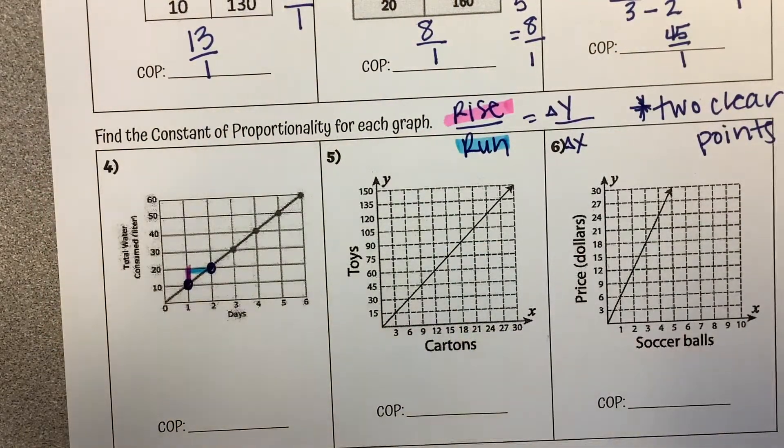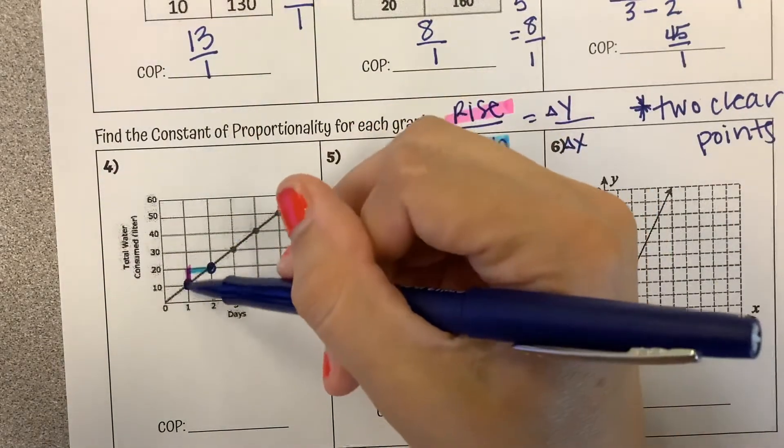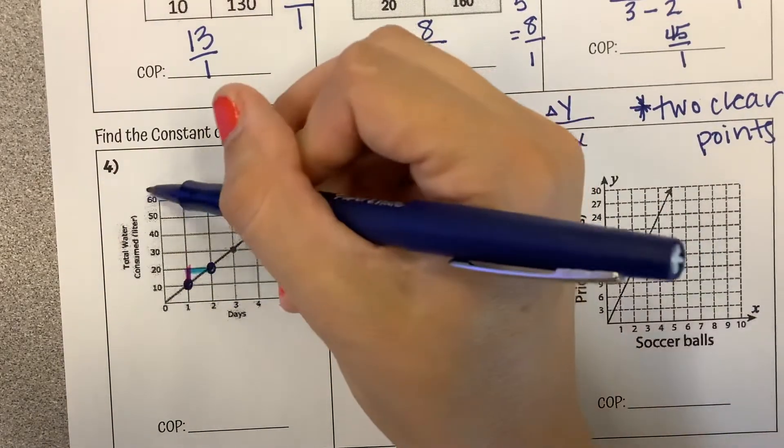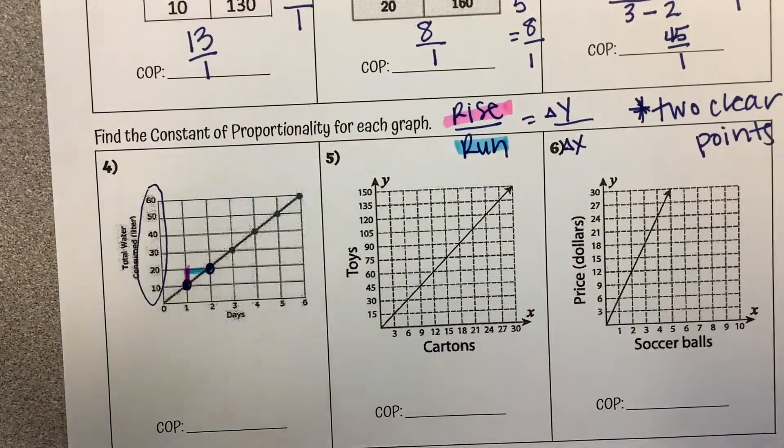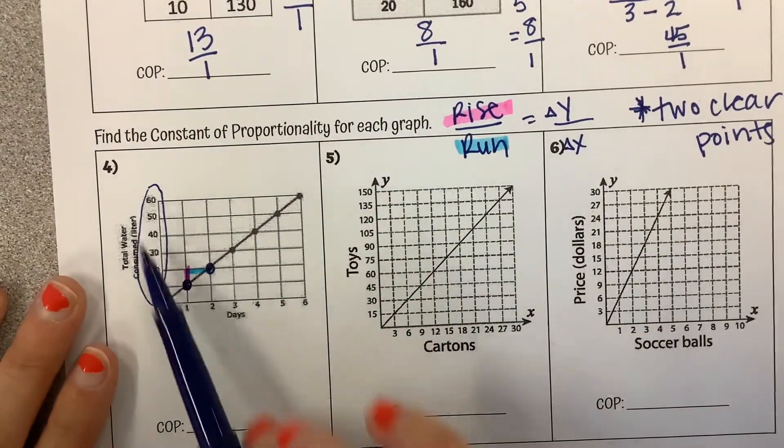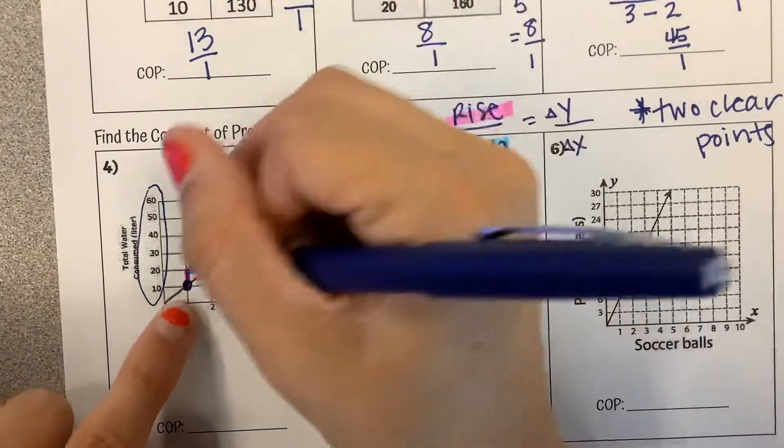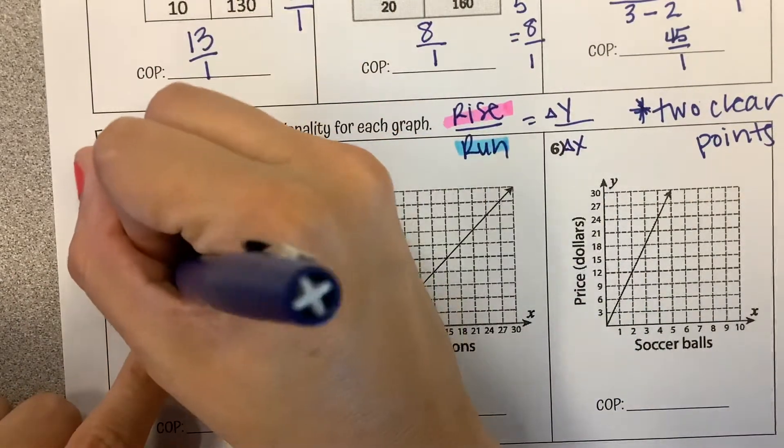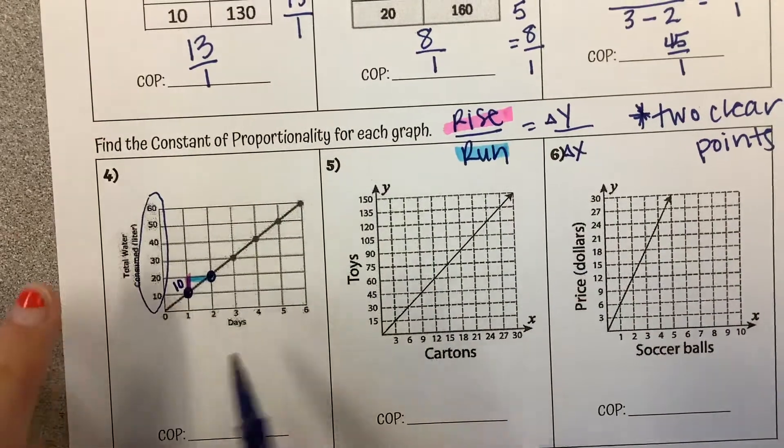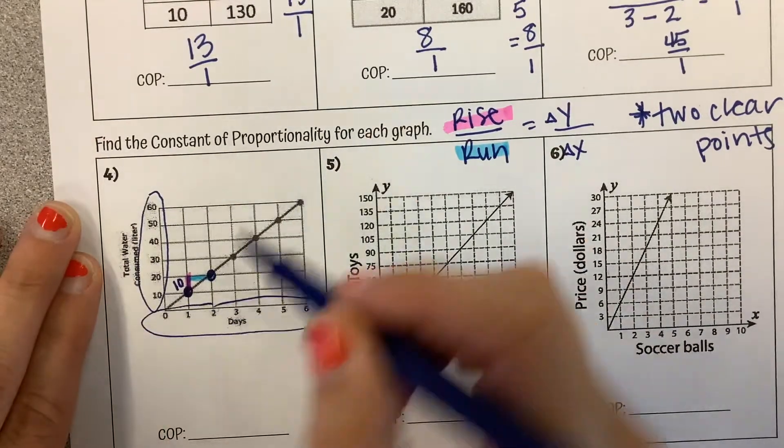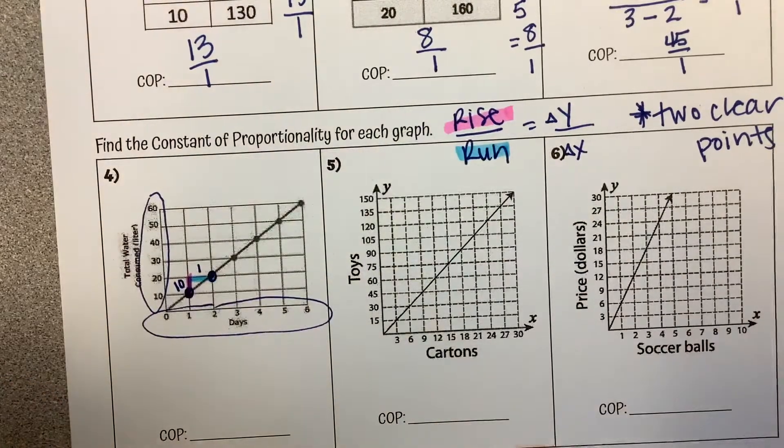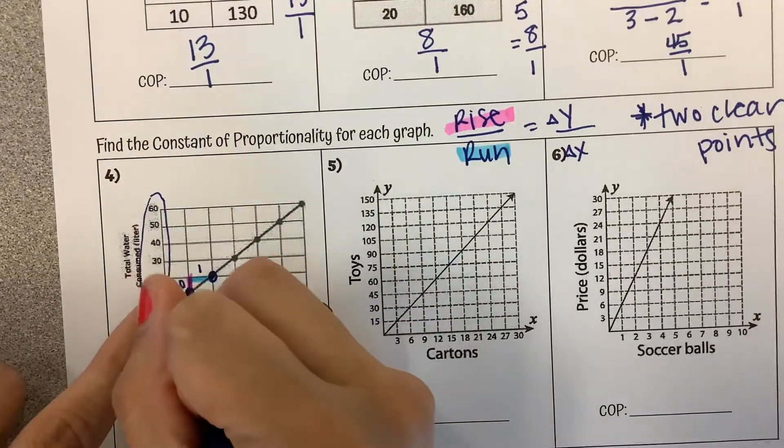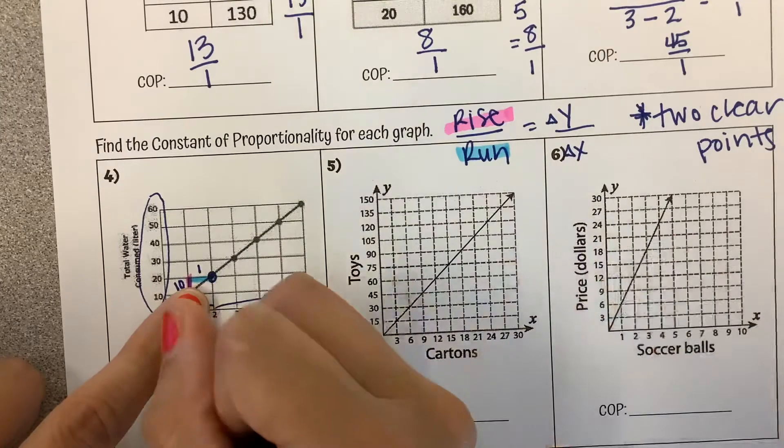So I've got my rise here over the distance across here. So when I look at this, the rise, my instinct would be it goes up 1. But I need to pay extra close attention to the axis and how much it goes up by. On the left side here, on the y, it's going up by 10. So this rise from 10 to 20 is 10. When I look at this axis, it is just going up by 1. So from 1 to 2, going across here is 1. So our rise was 10. Our run was 1.